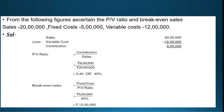Sales of Rs. 20,00,000 minus Variable Cost of Rs. 12,00,000 gives Contribution = Rs. 8,00,000. Now, PV Ratio = Contribution divided by Sales = 8,00,000 divided by 20,00,000 = 0.4 or 40%.